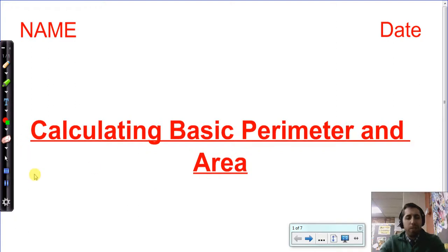Alright, 6th grade, we are just reviewing some things that should be pretty familiar, but they're essential as we get into some more interesting or complex area and perimeter calculations. So we're just going to review the basics of what these are and how to calculate them. Name, date, title, here we go.